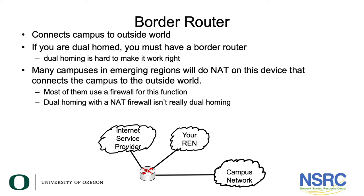Many campuses in emerging regions will do NAT on this border router, and this NAT function actually somewhat acts as a firewall. Simply by the fact that unless there's a static NAT translation on the border router, nobody from the outside world can deliver traffic to any part of your campus network without that device on your campus network first initiating an outbound connection.